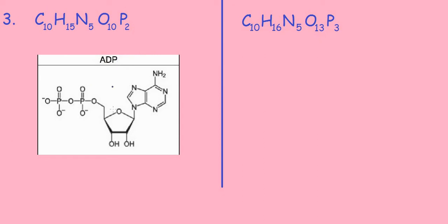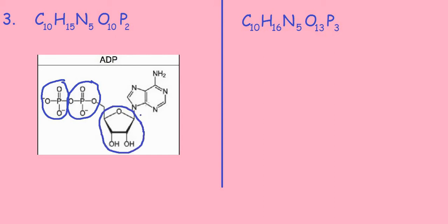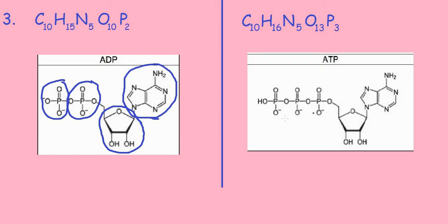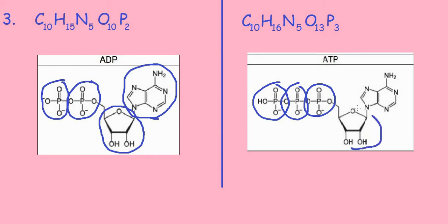Now for the structural difference. The ADP molecule has two phosphate groups, attached to a five-carbon ribose sugar, which is further attached to the adenosine group. ATP has a similar structure, but instead of two phosphate groups, it has three phosphate groups, also attached to a ribose sugar which is further attached to adenosine.